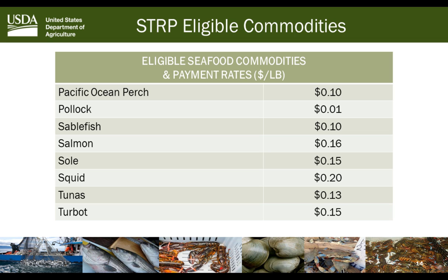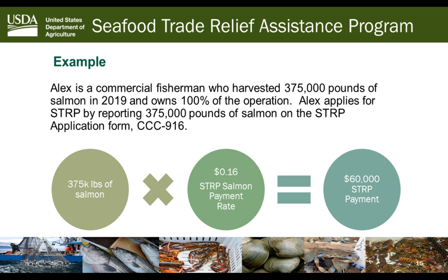Regarding lower rates such as pollock at one cent per pound: it goes back to the relative size of the loss and the amount of pounds harvested in comparison. Even so, we encourage you to include pollock if that's what you fish. FSA pays on the nearest whole dollar — for example, 10,000 pounds of pollock at one cent per pound equals $100.